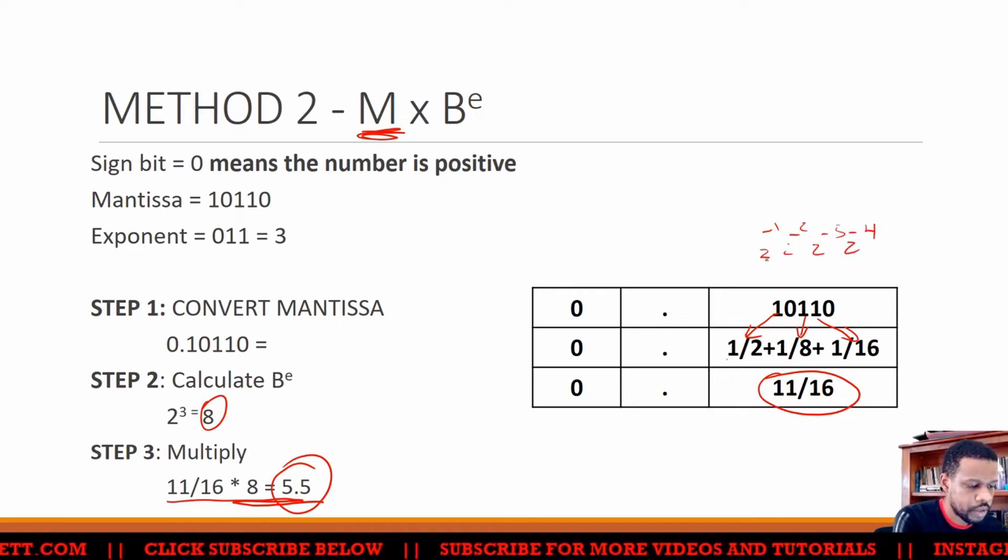2 to the minus 4. So 2 to the minus 1 is a half. This is a quarter. Then you go to 1/8. Then you go to 1/16. And then you go to 1/32.